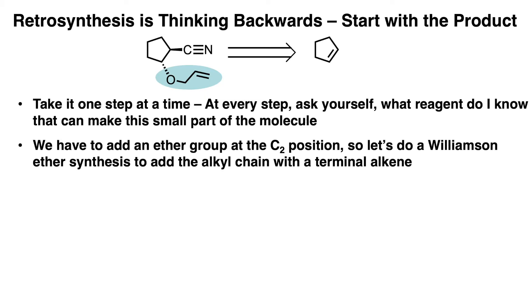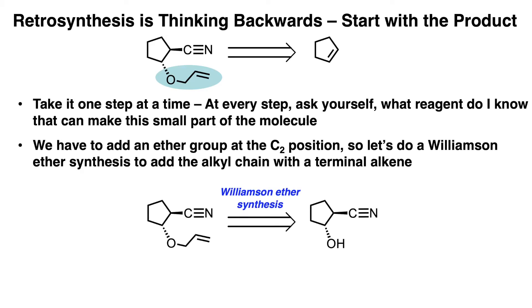The key to retrosynthesis is that we have to think backwards. Remember, since these are retrosynthetic arrows, the left side is the target molecule and the right side is our starting material. So let's break down the target molecule one step at a time — at every step, think about what reagent you know that can make this small part of the molecule. Highlighted in blue is the ether group with a terminal alkene that we're going to focus on first. We have to add an ether group at the C2 position, so let's do a Williamson ether synthesis to add the alkyl chain with a terminal alkene. For now, we're just going to brainstorm a possible pathway, so we'll write down Williamson ether synthesis above the synthetic arrows.